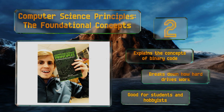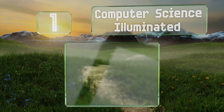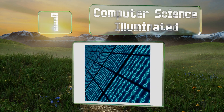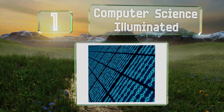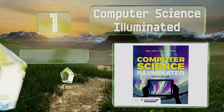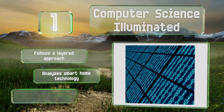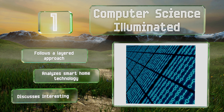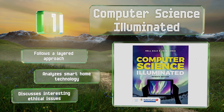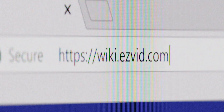Coming in at number one, if you're new to the subject you likely won't find a better starting point than Computer Science Illuminated. It's meant to bring even the most inexperienced readers up to speed on the basics and provide them with a solid foundation for moving on to advanced topics. It follows a layered approach, analyzes smart home technology, and also discusses interesting ethical issues.